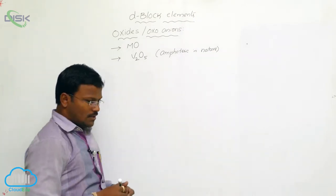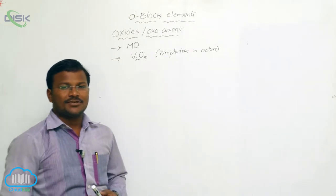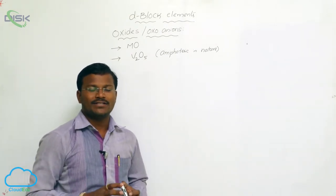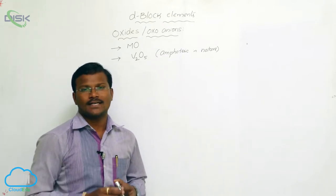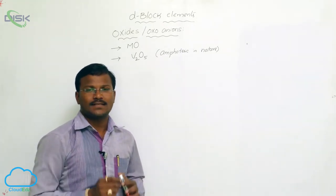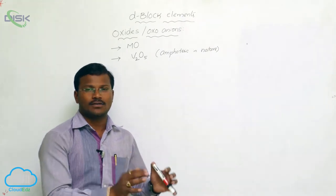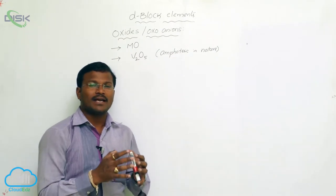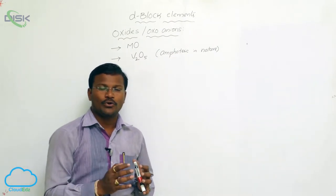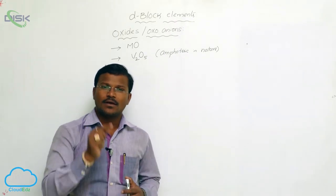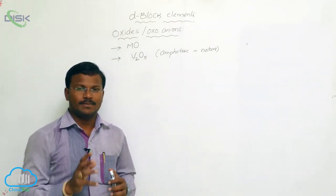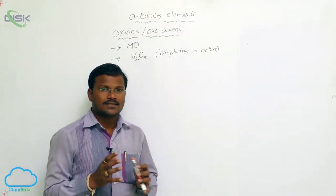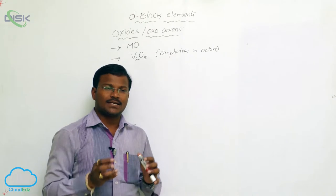Oxides can be classified into three major categories: acidic oxides, basic oxides, and amphoteric oxides. Acidic oxides are those which, by reacting with water, produce acids. Basic oxides are those which, by reacting with water, produce bases.